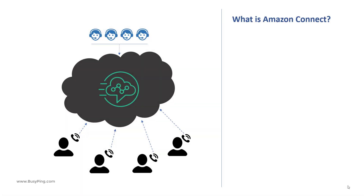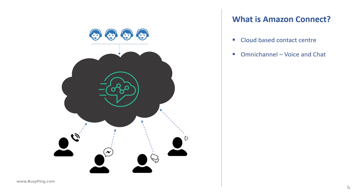So what is Amazon Connect? Amazon Connect is a highly scalable cloud-based contact center solution that can be quickly built and deployed with only a few clicks. It includes both voice and chat, providing an omnichannel experience for the customers.